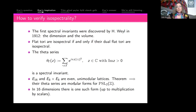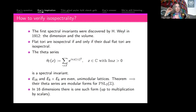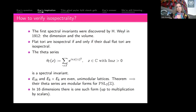For an n-dimensional compact Riemannian manifold, the kth eigenvalue grows on the order of k to the power 2 divided by n. In one dimension, eigenvalues are square integer multiples, growing like k squared. These lattices E16 and E8 times E8 are even and unimodular, and by a theorem in number theory their theta series are modular forms for PSL2Z. In 16 dimensions there's only one such form up to scalar multiplication, so they have the same theta series, proving isospectrality without computing individual eigenvalues.